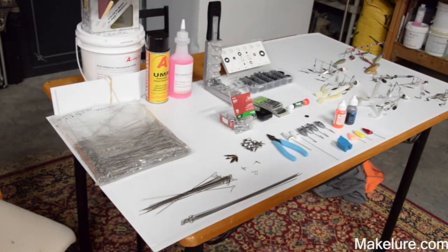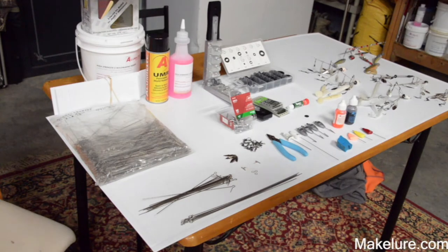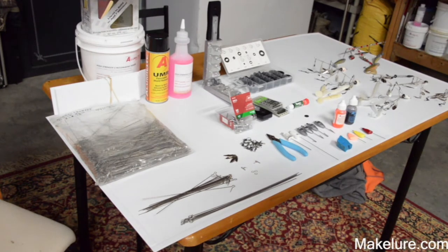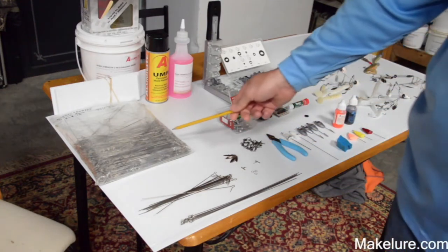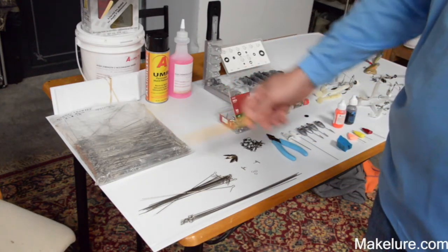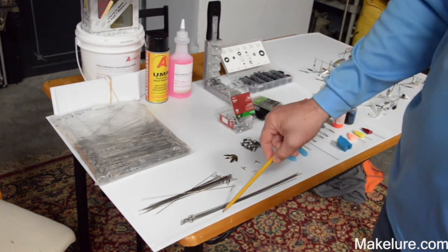This is basically all the material you're going to need to make your A rigs at home. About half of this material comes from MakeLure.com. We're using 40 gauge wire, some 50 gauge wire for our striper rigs.